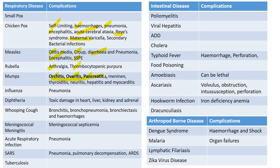Further mumps complications include pancreatitis, meningoencephalitis, thyroiditis, neuritis, hepatitis, and myocarditis. Influenza: pneumonia is the common complication and cause of death. Diphtheria: toxic damage to the heart, liver, kidney, and adrenal glands; whooping cough bronchitis, bronchopneumonia, bronchiectasis, and hemorrhages. Meningococcal septicemia is a complication of meningococcal meningitis. For ARI, pneumonia is the common complication and cause of death. For SARS, pneumonia and pulmonary decompensation — ARDS is the most common cause of death.